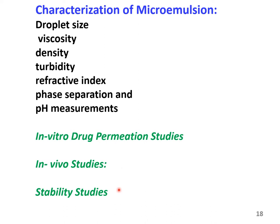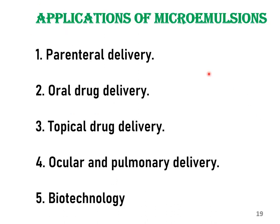In case of the formulation that is under development, it is very important to carry out stability studies and these can be carried out by using the ICH guidelines or other suitable guidelines. The major route of delivery of microemulsions is the oral route and the other important routes are the parenteral route as well as the topical route. Microemulsions have also been successful in delivering the drug to the ocular tissues as well as the pulmonary tissues. Biotechnological applications of microemulsions have also been reported in the literature.